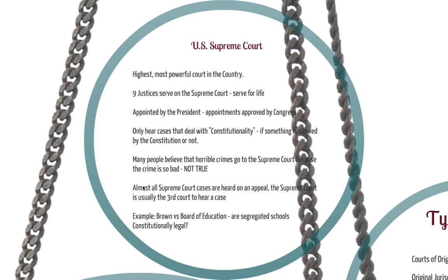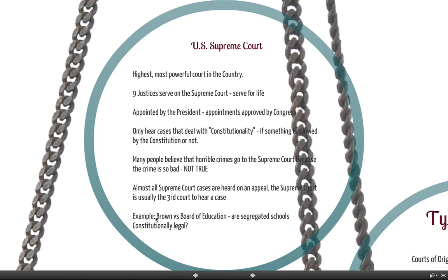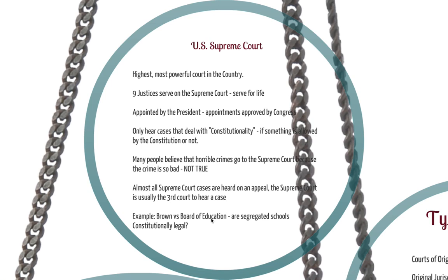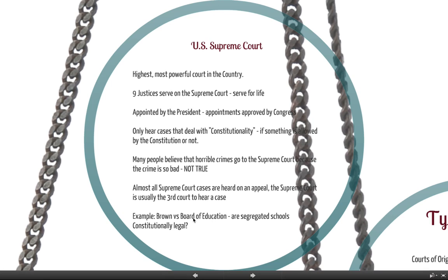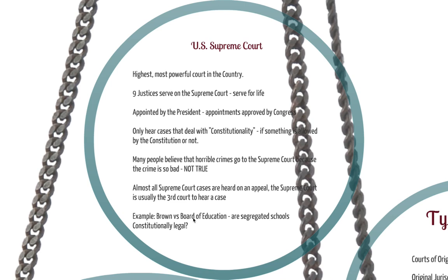It usually starts in a smaller court and works its way up to an appeals court and then to the Supreme Court. What the Supreme Court does is answer questions about the Constitution. One of the most famous Supreme Court cases is Brown v. Board of Education from the 1950s, where Black students sued saying that segregated schools shouldn't be allowed — that it's actually against the Constitution and the 14th Amendment. That case went all the way up the chain and was finally heard by the Supreme Court. The Supreme Court ruled that segregated schools were unconstitutional, and that's why Black and white students eventually went to school together in the same school.